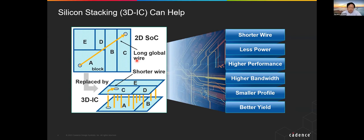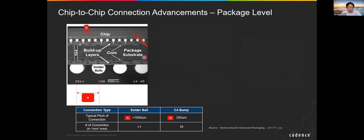This picture comes from Dr. John Lau's book. Starting from the solder ball — which connects the package to the PCB — typically with about 1 mm pitch and 500 micron size. Then we have the C4 bump, which stands for controlled collapse chip connection. Above the package substrate you have the C4 bump; below the package you have the solder ball bump. C4 bumps, previously used for flip chips, are on the order of 100 microns in pitch.